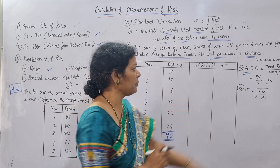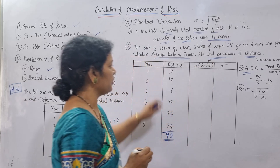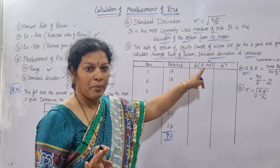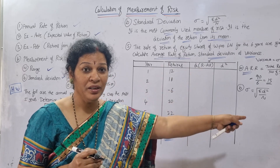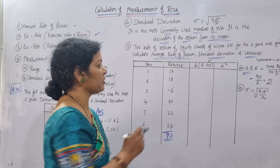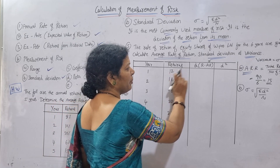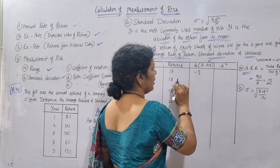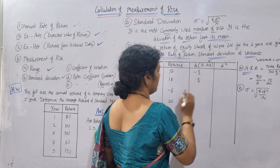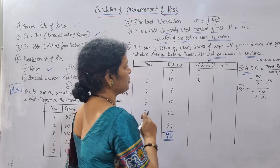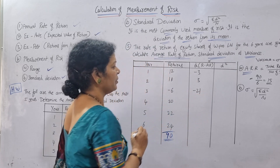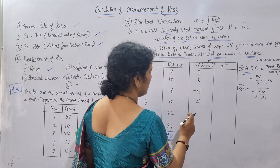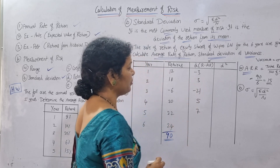Average return is 15. Taking deviations from the arithmetic mean: first year, 12 minus 15 equals minus 3. Then 18 minus 15 equals plus 3. Minus 6 minus 15 equals minus 21. Then 20 minus 15 equals 5. 22 minus 15 equals 7. 24 minus 15 equals 9. So deviations are: -3, +3, -21, 5, 7, 9.